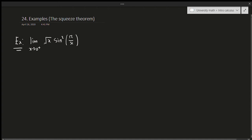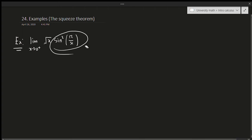The reason it's zero from the right is because the square root function is only defined when x is zero or bigger. If we had zero from the left, that wouldn't make sense because the domain isn't defined for x less than zero. Once again, I can't plug in zero because we get pi over zero, which is undefined, so we have to use the squeeze theorem. Let's write down our inequality: minus one is less than or equal to sine of x, which is less than one.